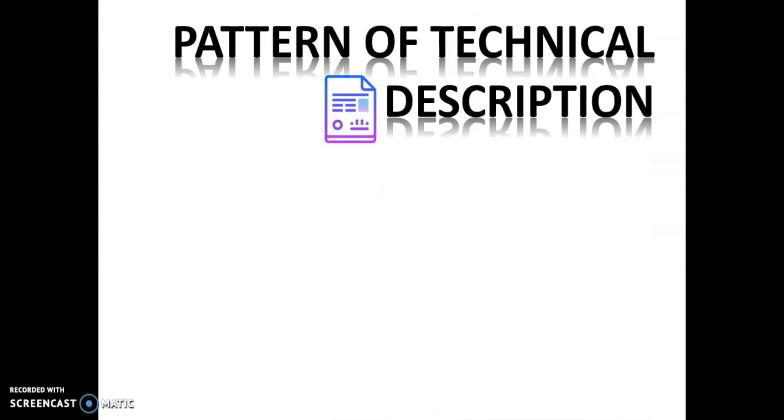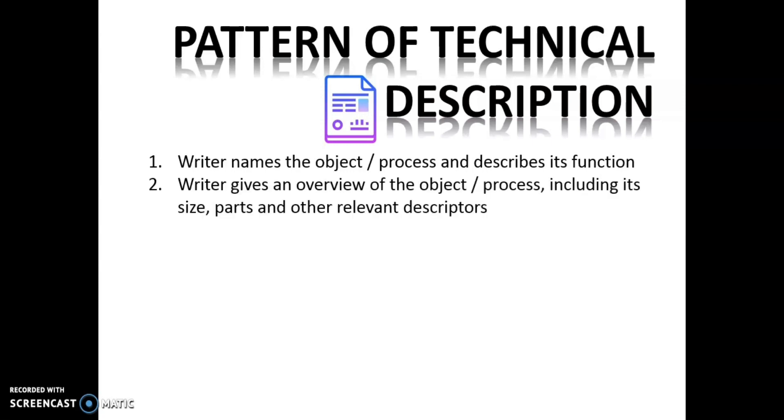What are the patterns of technical description? First, the writer will name the object or process and describe its function. Second, the writer will give an overview of the object or process, including its size, parts, and other relevant descriptors.